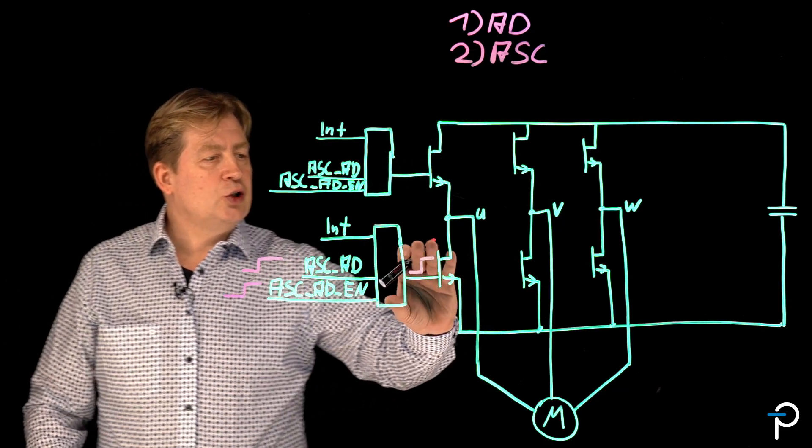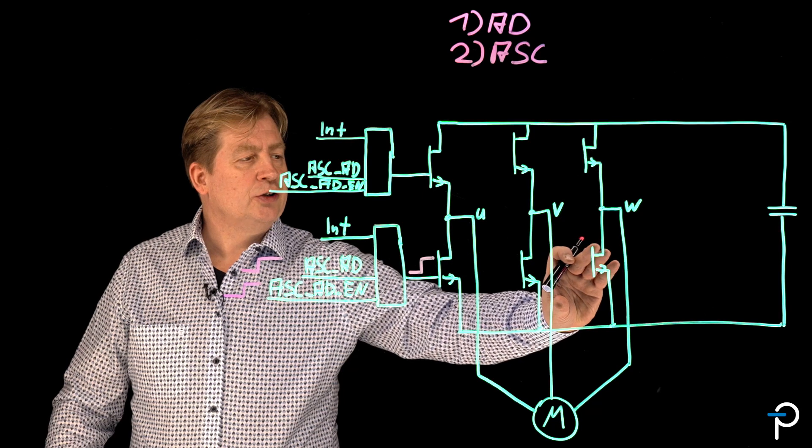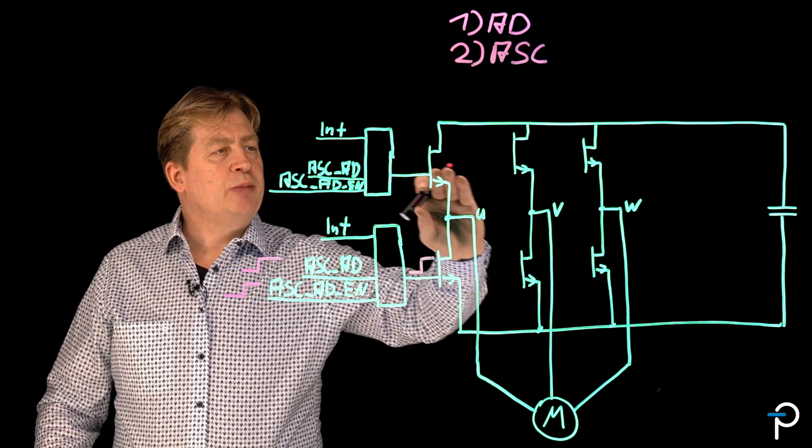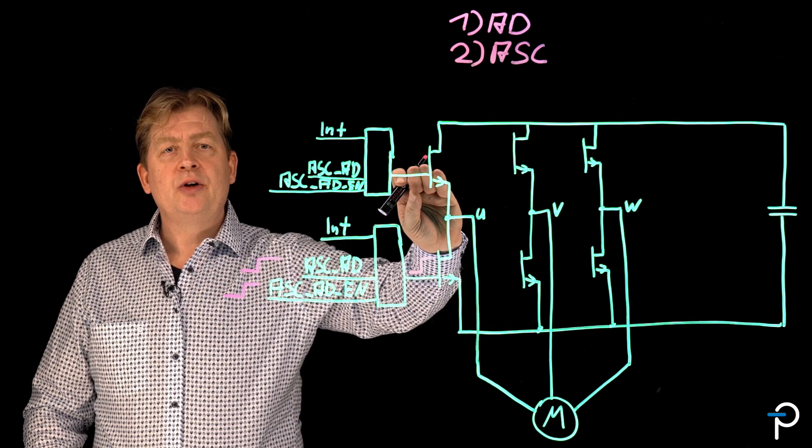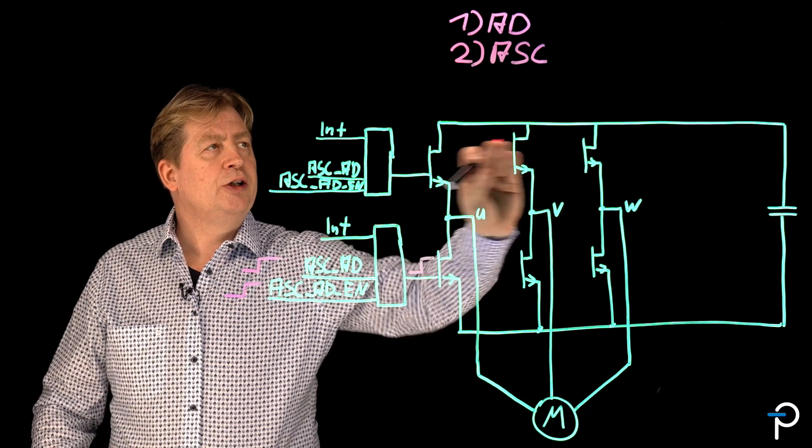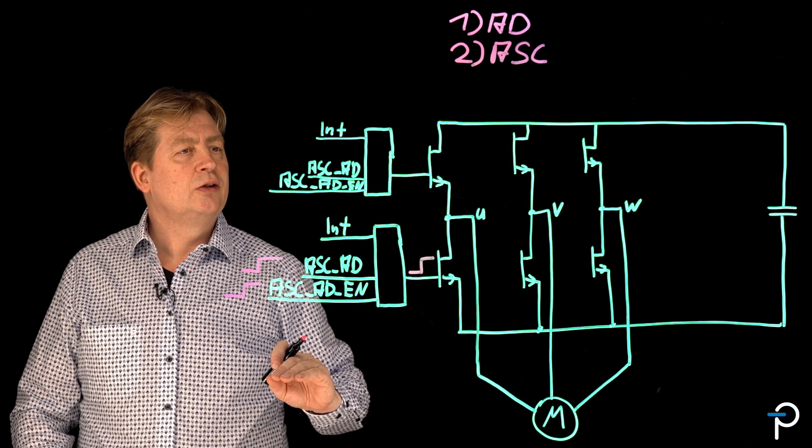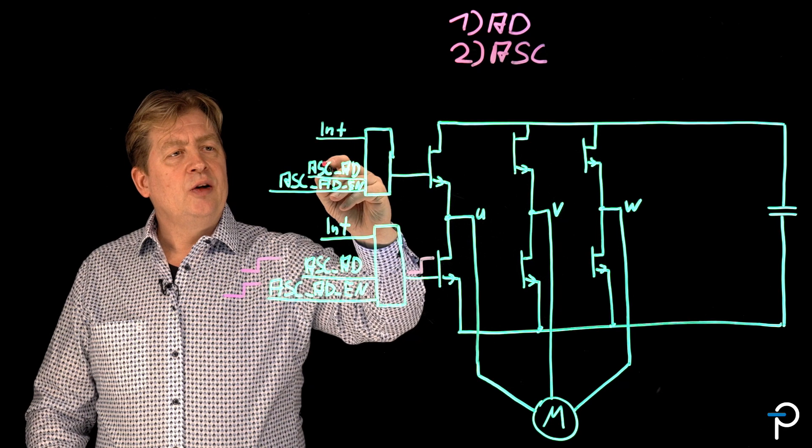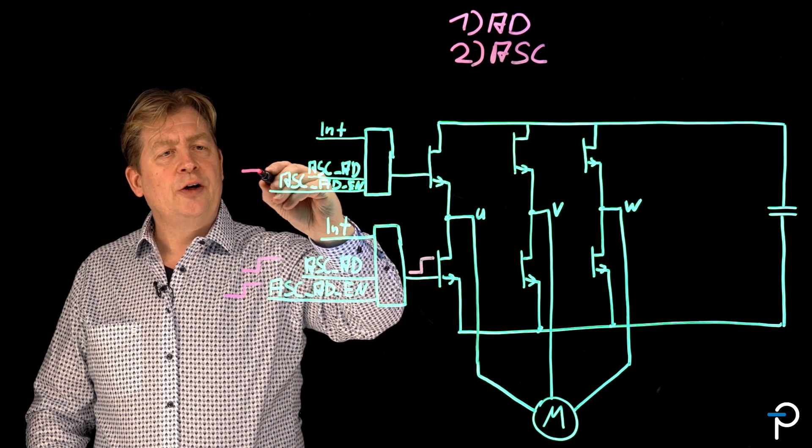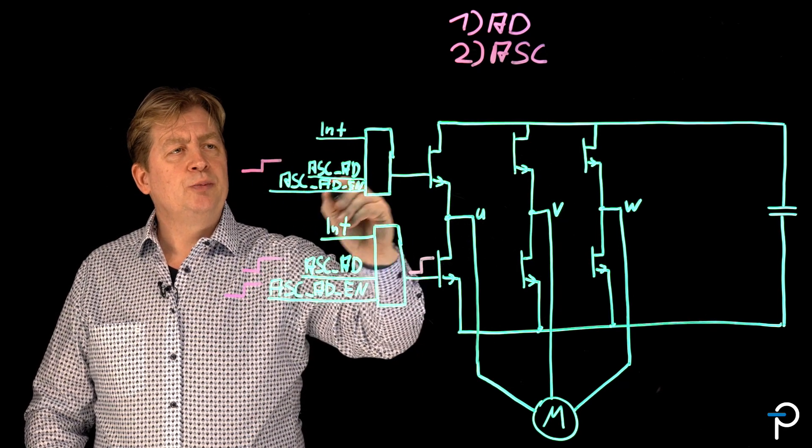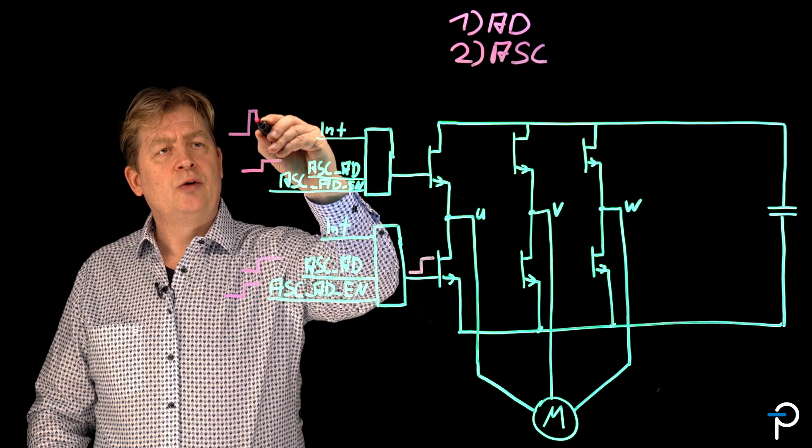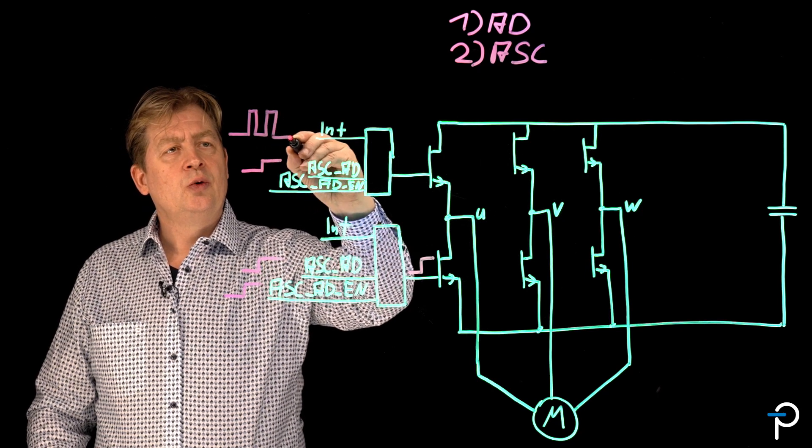In this situation we are shorting the bottom 3 IGBT or silicon carbide and we are pulsing with a lower gate emitter voltage the top IGBTs or silicon carbide. We are applying for this situation 5 volt on a digital input pin and applying again our frequency to the input of the top gate driver.